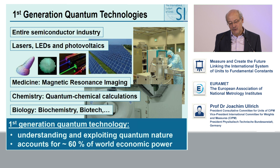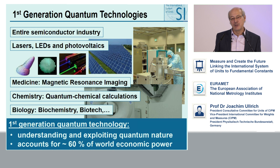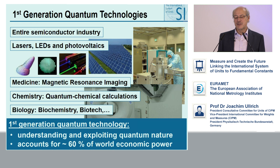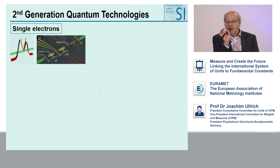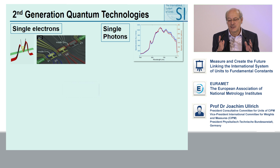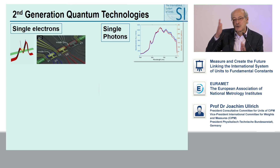Now what is the second quantum revolution? Since about 20 years we are gaining ever better control of single quantum particles. I showed you this single electron gun — we can have single electron currents and control them. We can have single photons, and this is a measurement from a metrology institute showing the spectrum of single photons. We can know exactly how many photons arrived at our detector. We have single magnetic flux quanta used in SQUIDs — superconducting quantum interference devices — to measure extremely small magnetic fields, like in your brain.